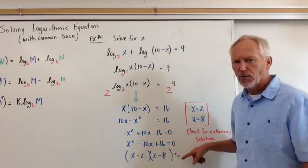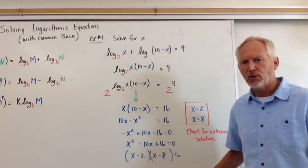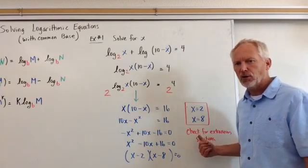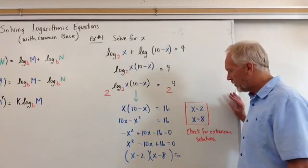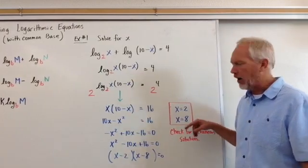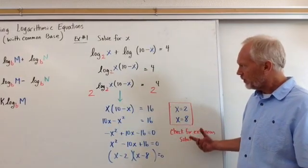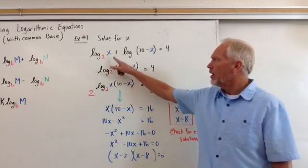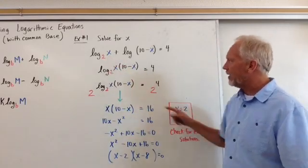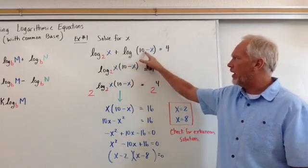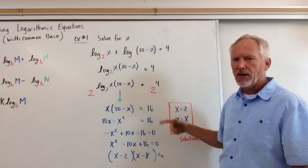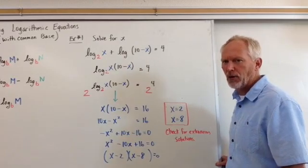Factor out a negative, and once we factor this, we get x minus 2 times x minus 8 equals 0, and your two solutions are x equals 2 and x equals 8. We want to make sure that we always check for extraneous solutions, so are any of these negative? No, it's okay there, and 10 minus 2 is a positive number, and 10 minus 8 is a positive number, so that works.